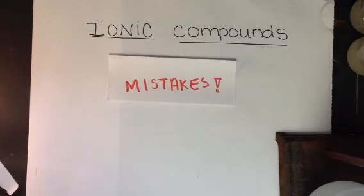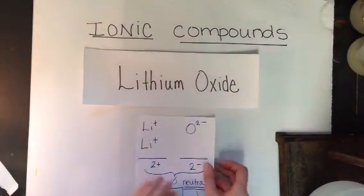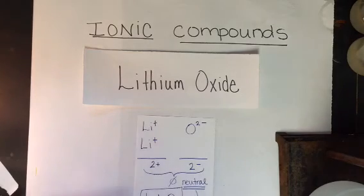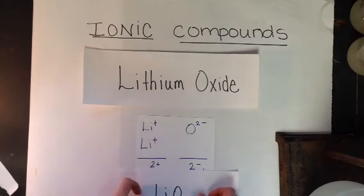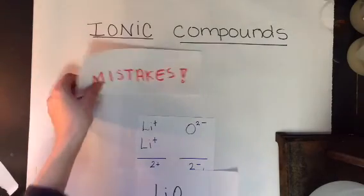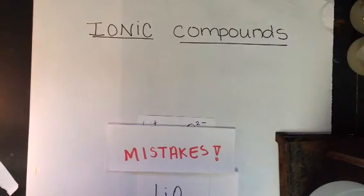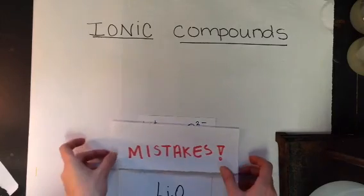If we take a look at our example with lithium, let me bring that back. Here's our example with lithium oxide. And if you remember here, I needed two lithiums for one oxygen. A mistake would be to write it like this. This would be a mistake: Li2O1. Remember, we don't write a one. So, you do not want to include a one. This would be a mistake. It is just the rule.